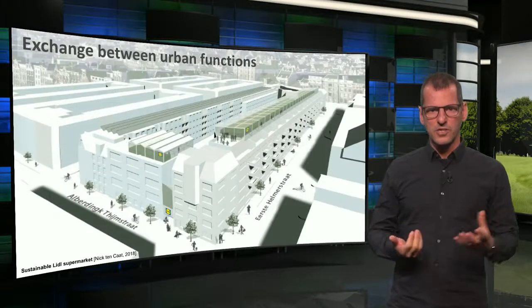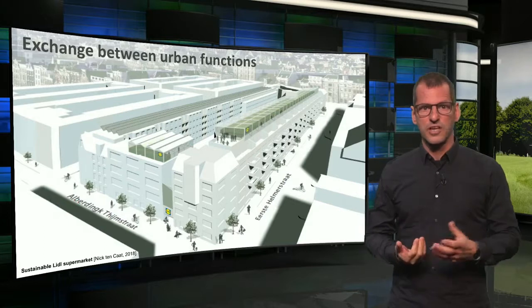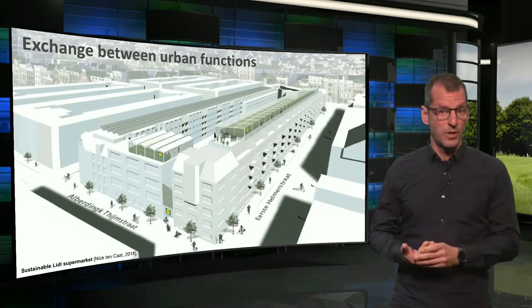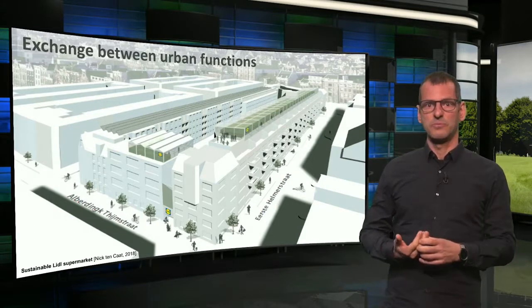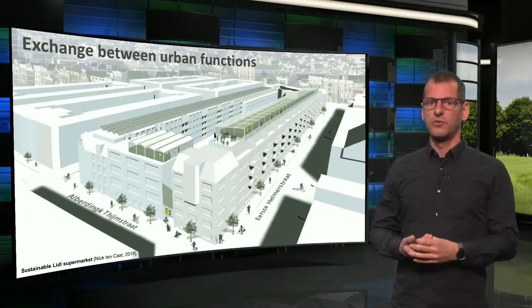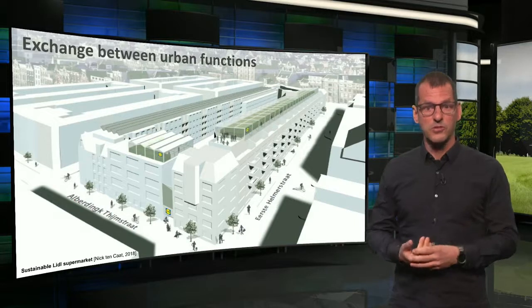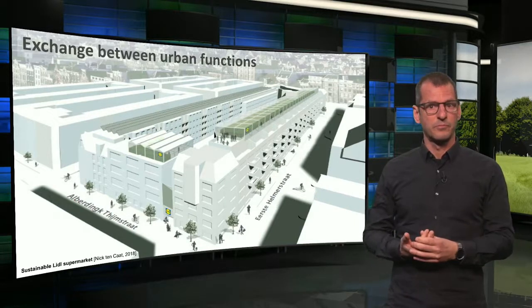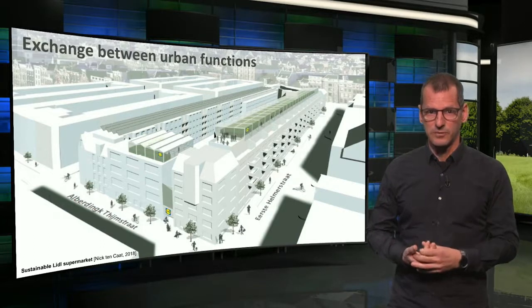A concrete example of this was elaborated by my master student Nick Tenkat, who designed a joint energy system for a supermarket positioned in an urban block of apartments in Amsterdam. Nick designed the energy system, added solar panels and greenhouses onto the roof, and calculated the performance. By using the heat coming from the supermarket's cooling, the apartments could be largely heated through the year. He managed a carbon emission reduction of more than 60%.